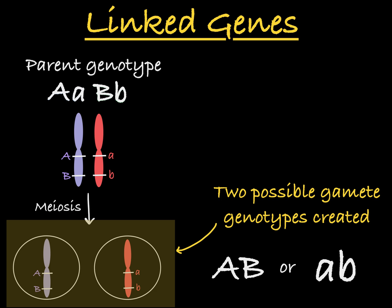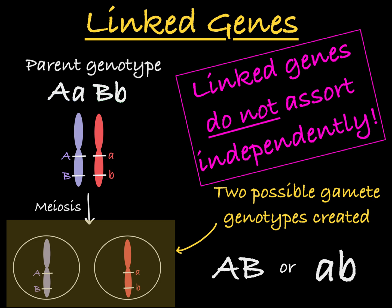Meaning that this organism will either pass on the two dominant alleles or the two recessive alleles. In a case like this, where two genes are linked, the alleles do not assort independently. The allele you inherit for gene A definitely has a bearing on what you inherit for gene B. The dominant allele of gene A is inherited with the dominant allele of gene B, and the two recessive alleles are inherited together.